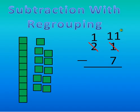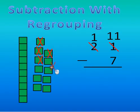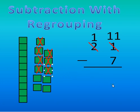Now I can subtract. Start in my ones place: 11 minus 7. 11 is bigger, so I can take 7 of them away. With my pictures, I show that by crossing them out, since I'm getting rid of them or taking them away when I subtract. I have to cross out 7 of them: 1, 2, 3, 4, 5, 6, and 7. And let's see how many I have left: 1, 2, 3, 4. 11 minus 7 — which you probably already knew, but I like to use the picture just to double check — is 4.